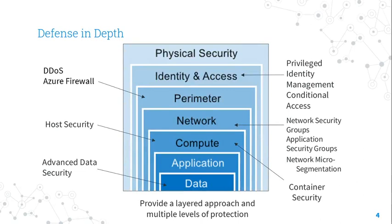The Defense in Depth approach includes additional controls in the design to mitigate risk to the organization in the event a primary security control fails. In this design strategy, consider how likely the primary control is to fail, the potential organizational risk it poses, and the additional controls especially in the likely cases that would cause the primary control to fail.